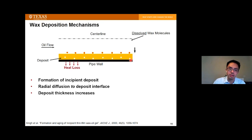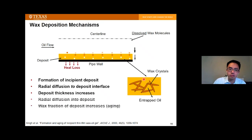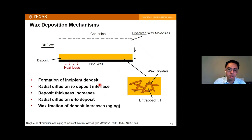The deposit has a gel structure consisting of wax crystals connected to form a crystal network with oil trapped between the crystals. The trapped oil provides a medium for wax molecules to further diffuse into the deposit, where they precipitate and increase the overall wax fraction of the deposit — a process called aging. Over time, not only does the deposit thickness increase, but its wax content also increases, making the deposit harder and harder and more difficult to remove.